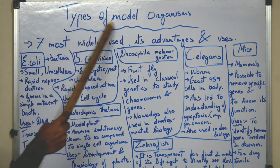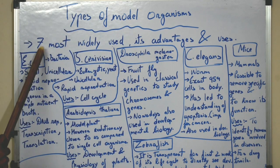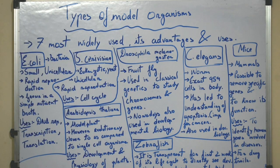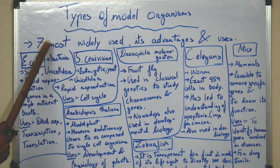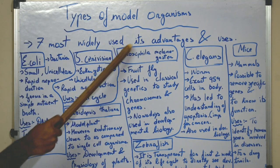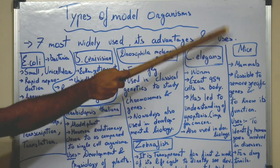So now we move on to study types of model organisms. Which model organisms are commonly used in the study of biology? Although there are many model organisms used in the field of biology, we will talk about the 7 most widely used model organisms, their advantages and uses.